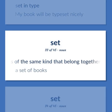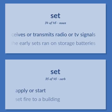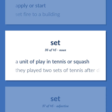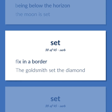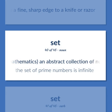A group of things of the same kind that belong together and are so used. A set of books. Any electronic equipment that receives or transmits radio or TV signals. The early sets ran on storage batteries. Apply or start. Set fire to a building. A unit of play in tennis or squash. They played two sets of tennis after dinner. Being below the horizon. The moon is set. Fix in a border. The goldsmith set the diamond. Give a fine, sharp edge to a knife or razor. Mathematics: an abstract collection of numbers or symbols. The set of prime numbers is infinite.